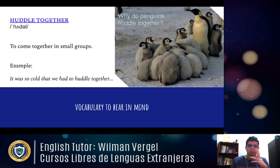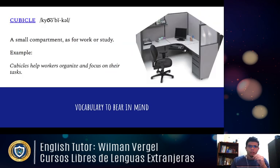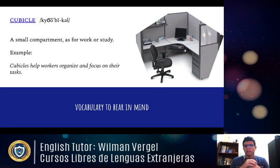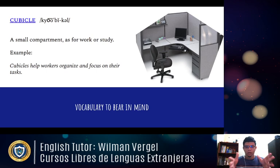The next word is 'cubicle' — it's what you can see in this picture. It's a small compartment for workers to study or work. Example: 'Cubicles help workers organize and focus on their tasks.' When you're in the compartment, it's just you and your tasks, so you're more focused. The pronunciation is 'cubicle.'